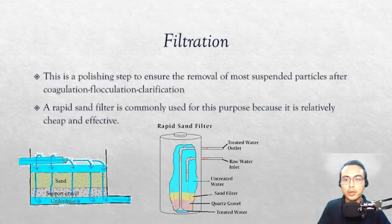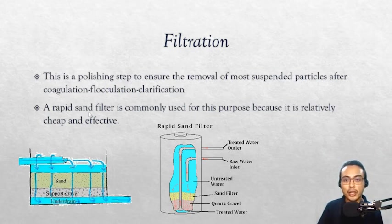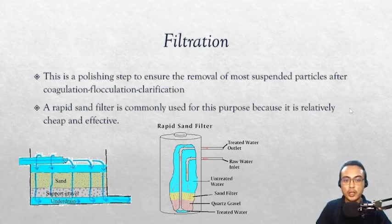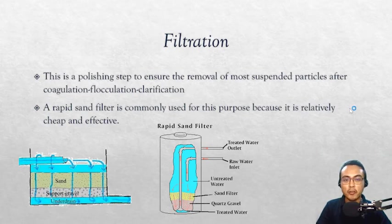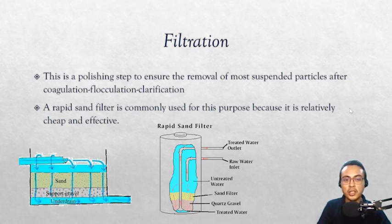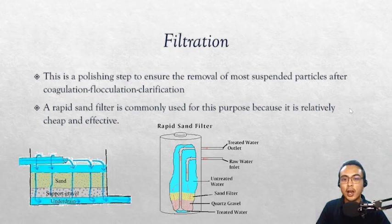After clarification and sedimentation, we have filtration — called a polishing step because it ensures removal of most remaining suspended particles. One of the most commonly used units is the rapid sand filter (RSF): a large container containing layers of sand, gravel, and other granulated materials such as granulated activated carbon (GAC). The purpose is to polish the water to remove every noticeable particle. The inclusion of activated carbon also allows absorption of organic substances not removed previously, and is especially important after pre-chlorination to capture disinfection byproducts.